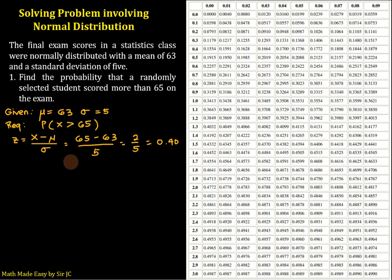Then we are looking at the probability that z is greater than 0.40. If we draw the normal curve, it looks like this. This is our z equals 0.4 approximately. Greater than, so we have to shade this portion.